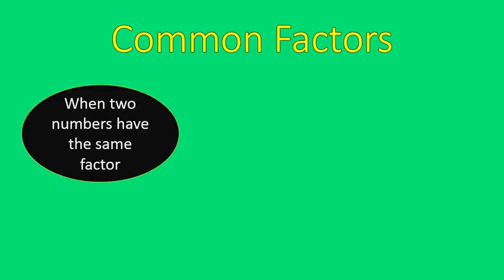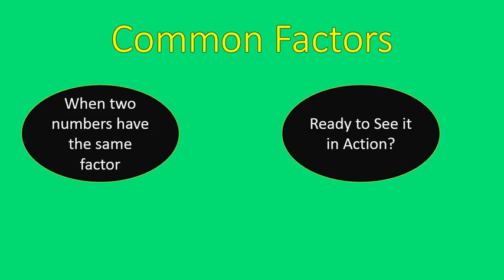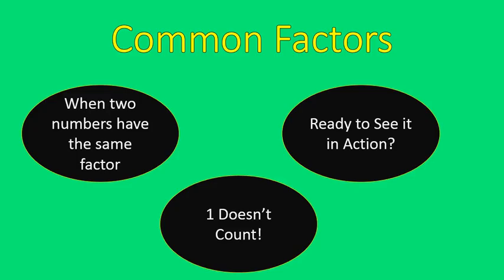Now let's switch gears and talk about common factors. Common factors are when two numbers have the same factor. There is one exception: one doesn't count. One is a factor of everything, so it would be a common factor of every single number. We're going to discount 1 and move on. Common factors are when two numbers share a factor that is the same between the two.